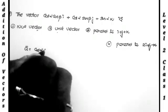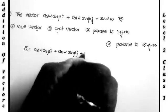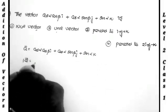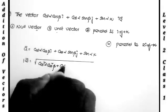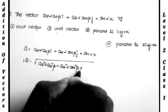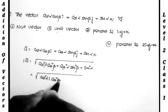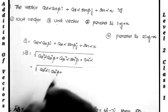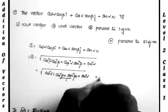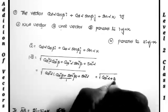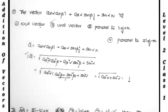Let a bar = cos α cos β · i + cos α sin β · j + sin α · k. The magnitude |a| = √(cos²α cos²β + cos²α sin²β + sin²α). Taking cos²α common from the first two terms: = √(cos²α(cos²β + sin²β) + sin²α) = √(cos²α · 1 + sin²α) = √1 = 1. Therefore the magnitude is 1, so this is a unit vector — the second option.